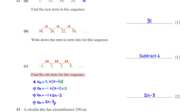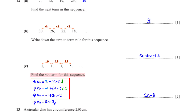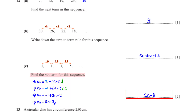Find the nth term for this sequence. When we look at the given sequence, we see that the terms have a constant difference of 2. This is the nth term formula for sequences with a common difference. A1 is the first term, which is negative 1. D is the common difference, which is 2. When we expand the brackets, 2 times n is 2n and 2 times negative 1 is negative 2. Negative 1 minus 2 is negative 3, and so the nth term is 2n minus 3.